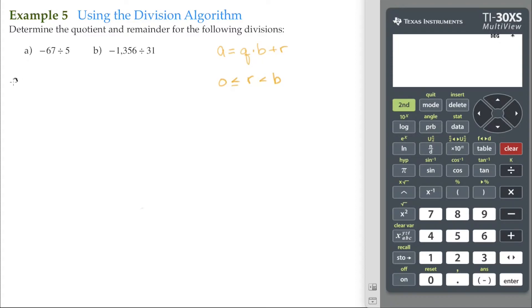For part A, we have negative 67 divided by 5. Using long division, it's 5, we have our box, and negative 67.